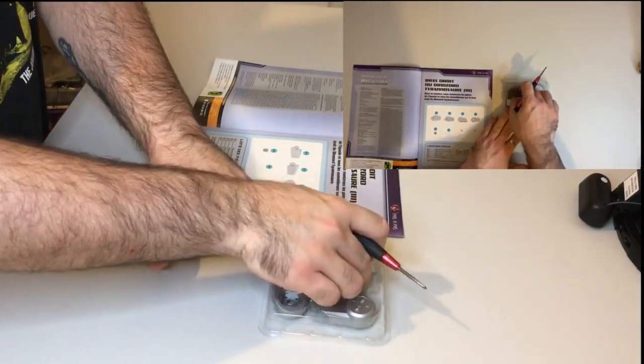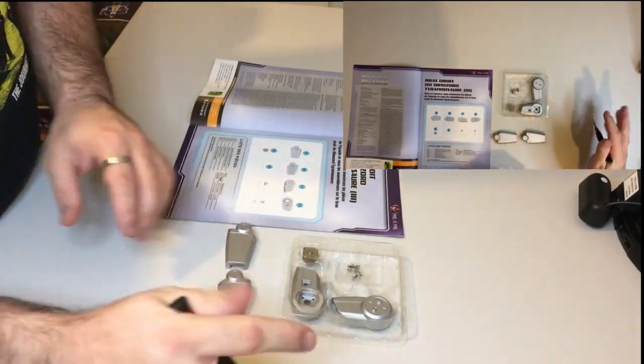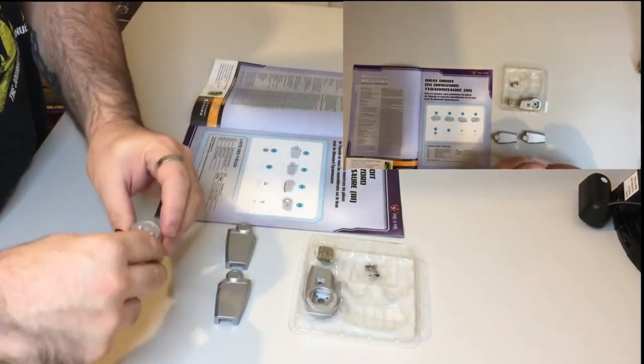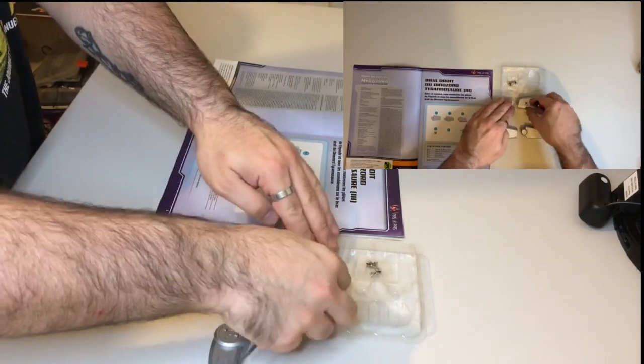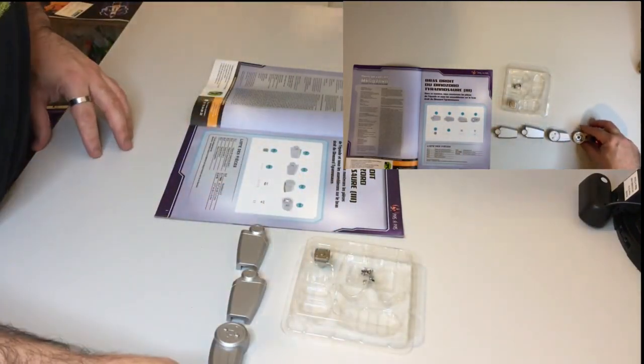So we've got 31.1 and 31.2, the arm covers. 31.3 and 31.4 which are the upper arms to the shoulders.